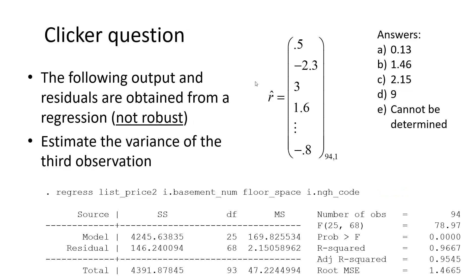And here we have a very similar question. Same residuals, same output. And now the question is, what is the estimate of the variance for the same observation, the three, when we are not looking at robust estimation, when we're just looking at general estimation, so OLS. So just the regular approach.